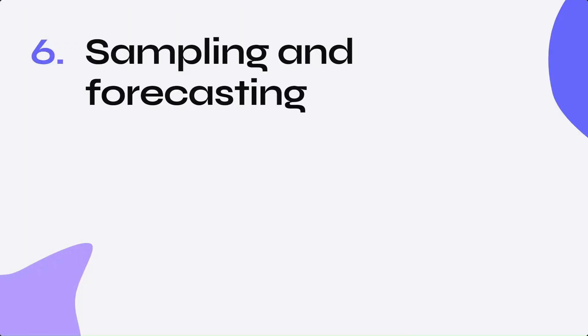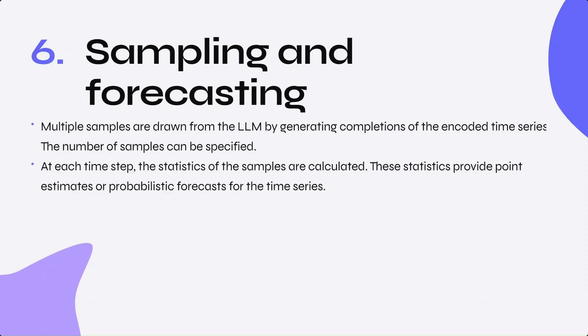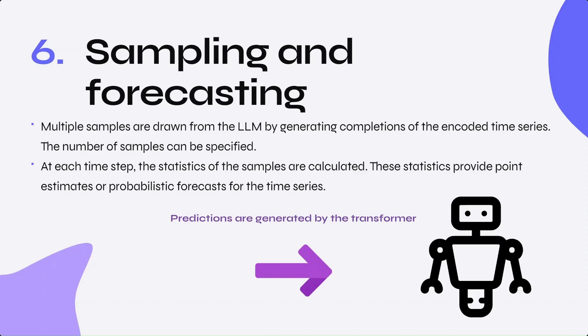The sixth step is sampling and forecasting. Multiple samples are drawn from the LLM by generating completions of the encoded time series. The number of samples can be specified, and each sample represents a possible extrapolation of the time series. At each time step, statistics of the samples are calculated — including measures such as median, mean, or quantiles — providing point estimates or probabilistic forecasts. Various techniques can be used to control the sampling process, such as temperature scaling, logit bias, and nucleus sampling. These techniques help control the randomness of the generated samples. The model then generates predictions for the next tokens in the sequence, done by the transformer.